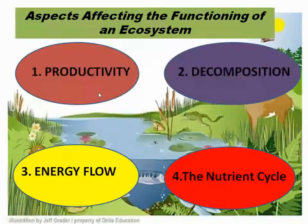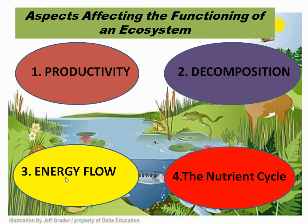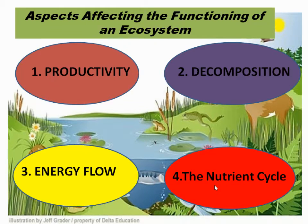We will be studying what productivity is, how and what are the different steps of decomposition, and how does energy flow in an ecosystem. We know that energy is stored in the form of chemical energy from the sun by the green plants. Various types of nutrient cycles are there — for example, carbon cycle, oxygen cycle, water cycle, phosphorus cycle, and so on.